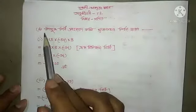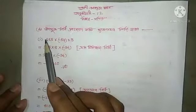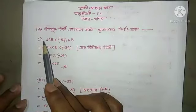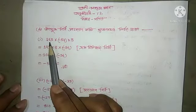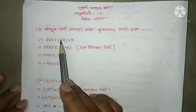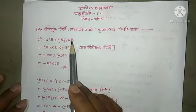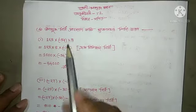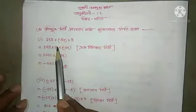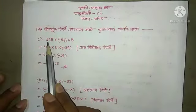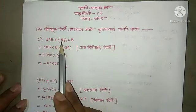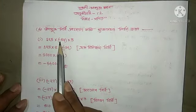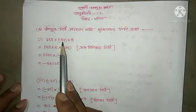In this video, I'll talk about BODMAS again. Question number 8: 125 into minus 54 into 8. Here we have to solve: 125 into minus 54.